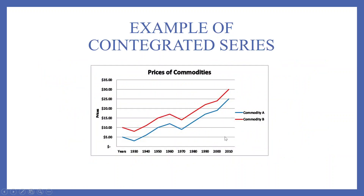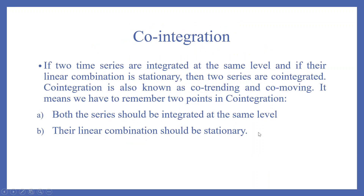Just see the example of two commodities whose prices are moving together — this is an example of a co-integrated series. So in the long run, these two series are co-integrated with each other. The definition goes this way: if two time series are integrated at the same level and if their linear combination is stationary, then the two series are co-integrated. Co-integration is also known as co-trending and co-moving.